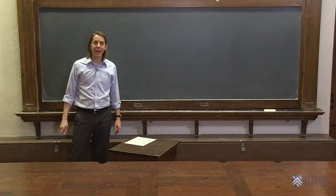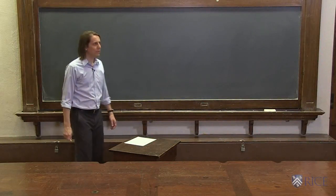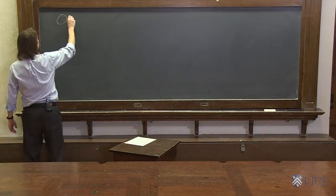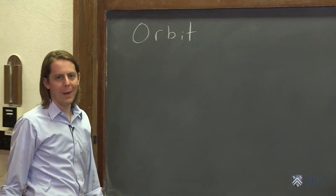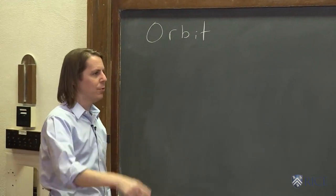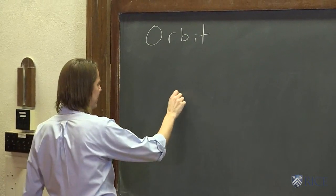Probably the most important application and physical phenomenon related to universal gravitation is orbit. The fact that one mass can use the gravitational force to go in a stable circle around another mass. So let's set it up.